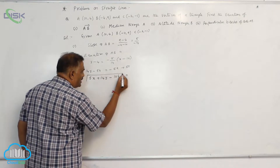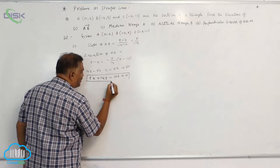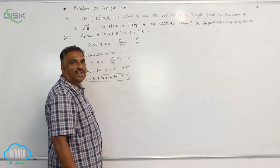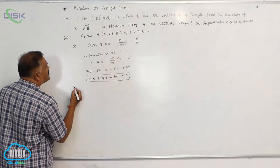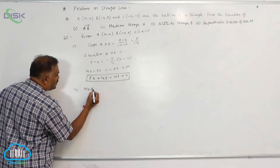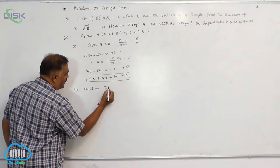So this is the equation of the line passing through A and B: 5x + 14y - 106 = 0. Now the second question: the median through A.